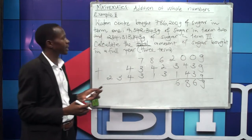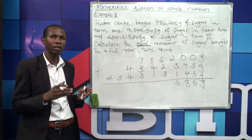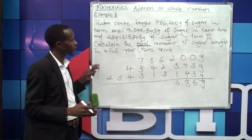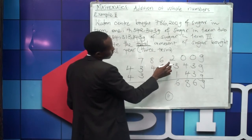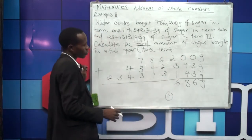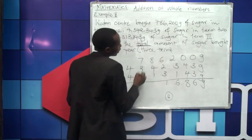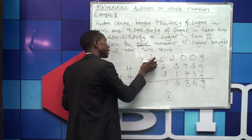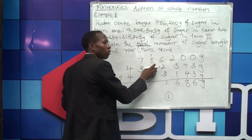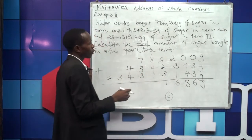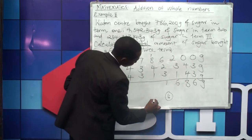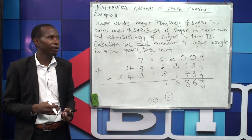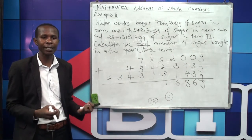Each place value is supposed to hold only one digit. So if 6 plus 2 is 8 and 8 plus 3 is 11, we write the last digit, 1, and regroup the 1. Then 1 plus 8 is 9, plus 4 is 13, plus 1 is 14. Since fourteen cannot be written at one place value, we write the last digit, 4, and regroup the 1.